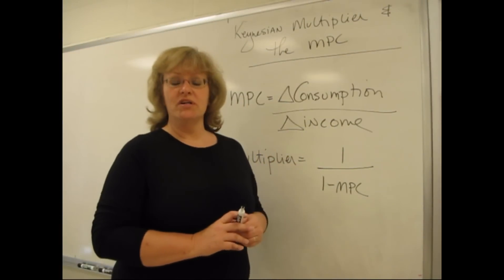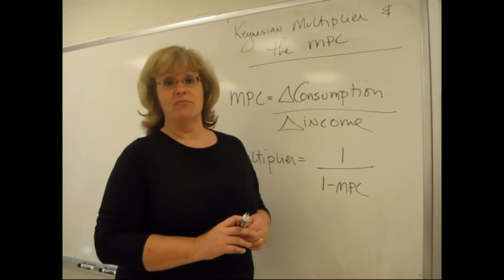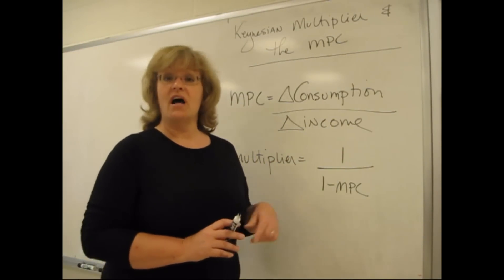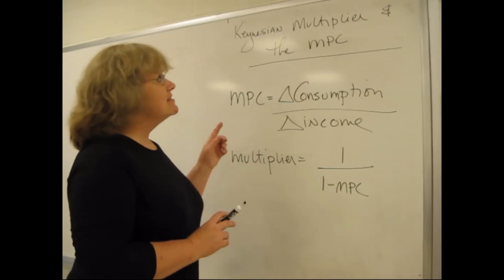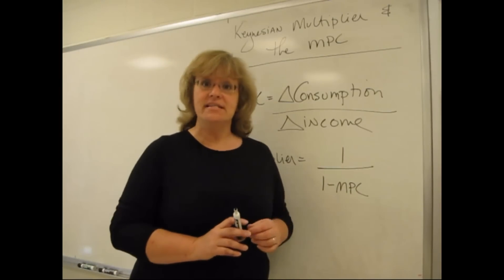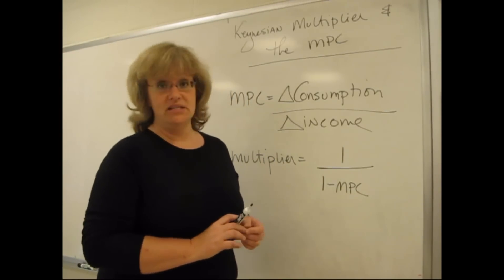Hi. The concept that we're going to talk about for this module is in Chapter 11 and Chapter 12 of McConnell's macro split, and that's the Keynesian multiplier and the MPC, or the marginal propensity to consume.